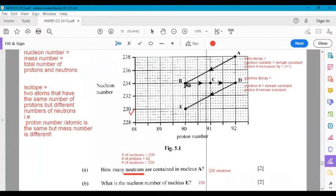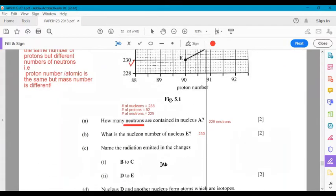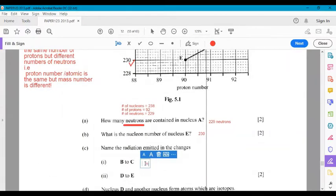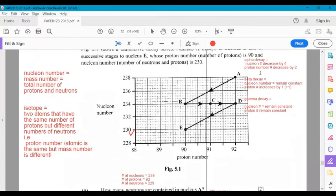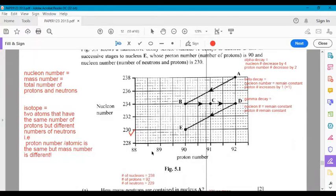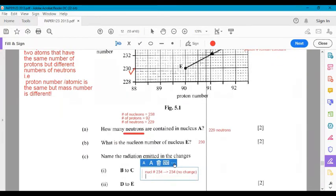All right. B to C, we see that initially the nucleon number is 234. And then at C, no change, 234. So B to C, nucleon number 234 to 234. No change. So that means that alpha is out. So it's between beta and gamma. Let's look at what change happens with the proton number.